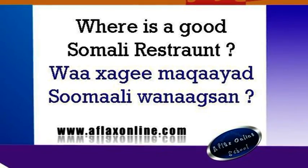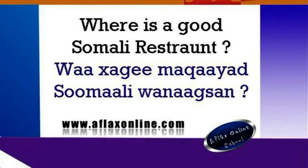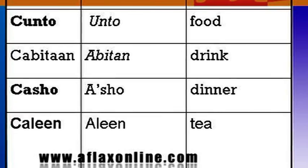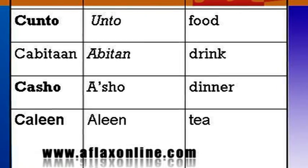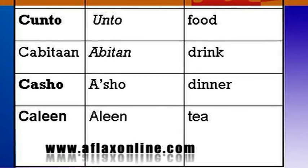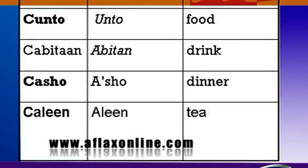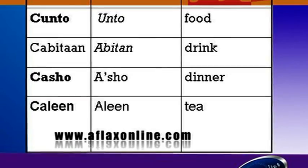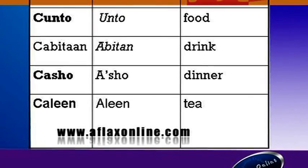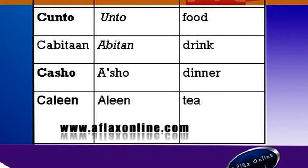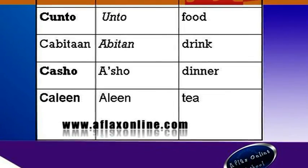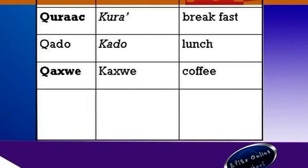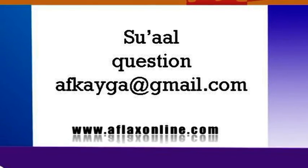Here are a few words I want to stop and help you pronounce. When learning a language you have to learn exactly how to pronounce and write words correctly — you can write notes for yourself but don't teach others a wrong pronunciation. If you have a hard time with the 'ah' sound, you can practice: 'cunto' — food, 'cabitaan' — drink, 'casho' — dinner, 'caano' — tea/milk. Other words: breakfast, lunch, 'kahwe' — coffee.